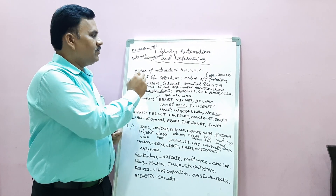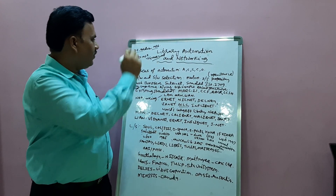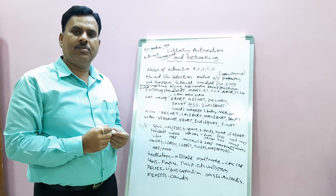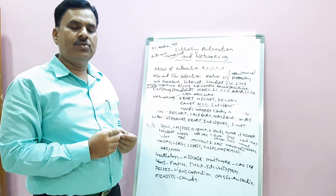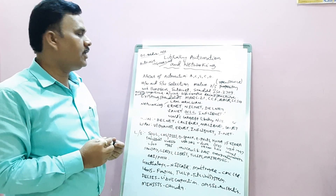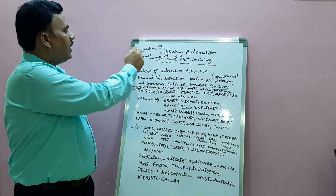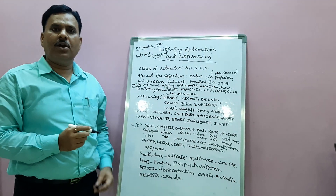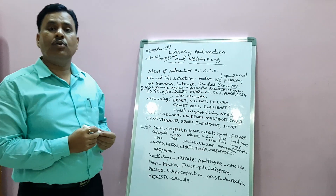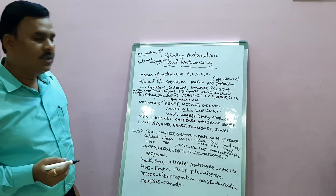Good morning. Today I'm going to explain about library automation and networking. You are all aware that in the previous classes we studied library automation, so I will briefly revise those topics within 5 to 10 minutes. Library automation was first introduced by DS Herder in 1936. The word automation came from the Greek word 'automos,' which means the computerization of documents.